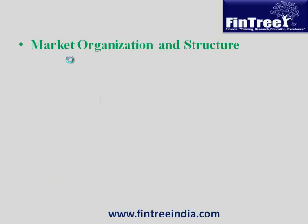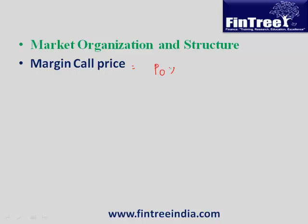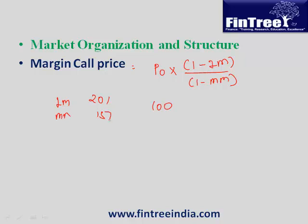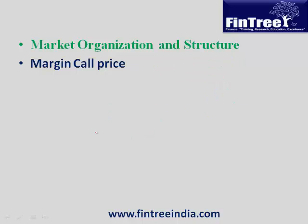Let's start with the first topic: market organization and structure. The formula for margin call price is price at time 0 multiplied by (1 minus initial margin) divided by (1 minus maintenance margin). For example, if price at time 0 is 100, initial margin is 20%, and maintenance margin is 15%, then you calculate 100 × 80% divided by 85%.